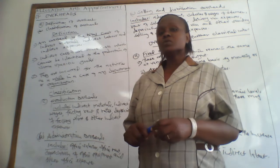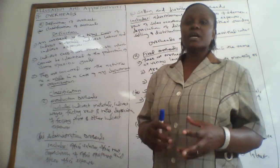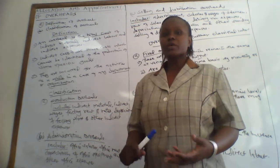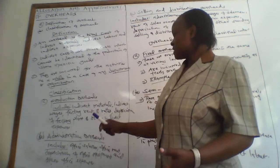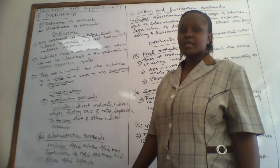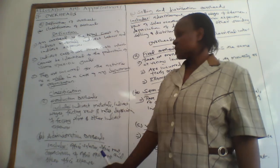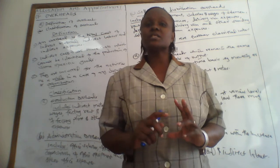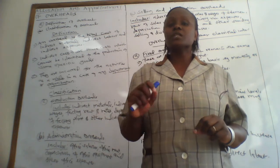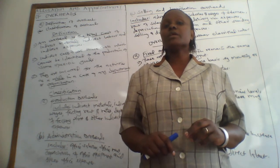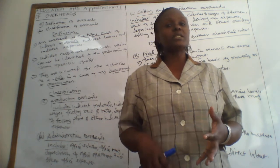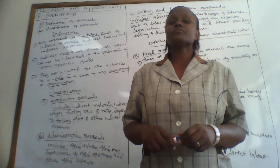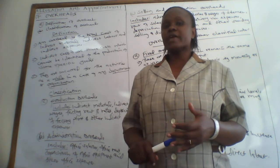Production overheads include those overheads which are incurred in the production department. They include indirect materials, indirect wages, factory rent and rates, depreciation of factory plant and machinery, and other indirect expenses - the expenses incurred when converting raw materials to finished goods in the manufacturing department.